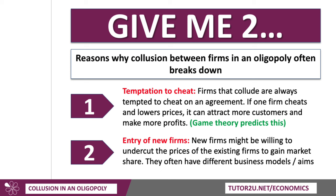First, there's the temptation to cheat. Firms that collude are always tempted to cheat on an agreement — if one firm overproduces and lowers their price, it can gain more customers and make more money, and if that's true for one firm, it's probably true for all the others. Game theory predicts that cheating is likely. Second, the entry of new firms into the market — new businesses often have different models and aims, and aren't necessarily willing to abide by the rules of the cartel. If the market becomes more contestable, cartels often break down. A good example is the rapid expansion of low-cost airlines such as Ryanair and EasyJet, which essentially undermined the cosy cartel of established carriers 20 or 30 years ago.